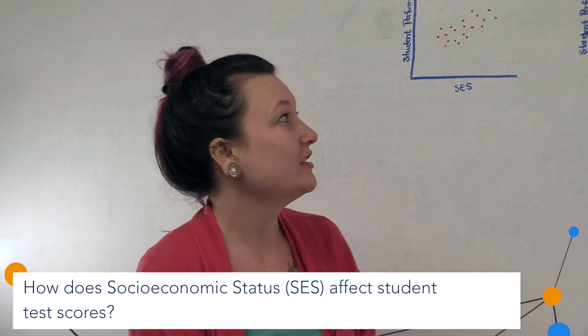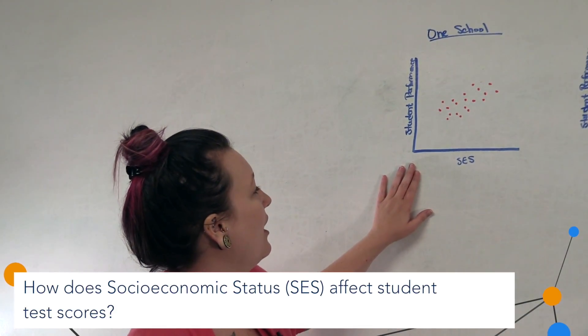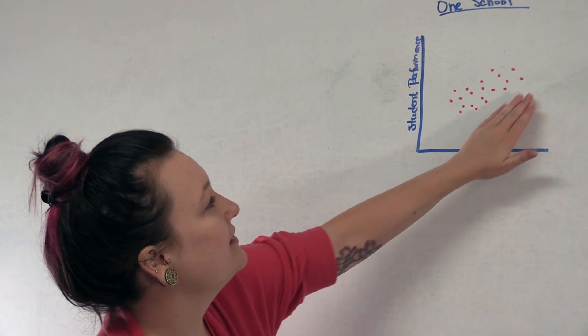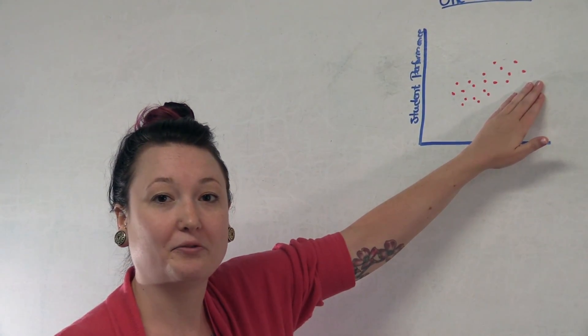In this case, we're looking at SES. So we have here a scatter plot of student SES by student performance. We can see here that there is indeed a pretty clear positive relationship.